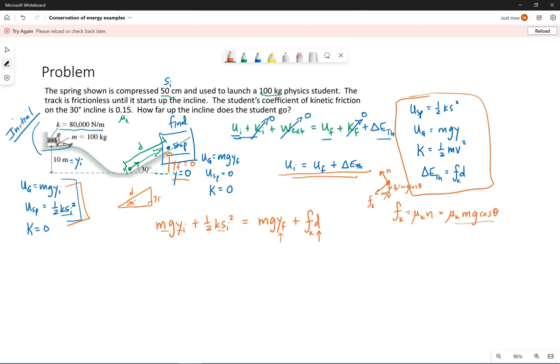If I draw just a triangle representing the distance along the incline and this y final, we have an opposite side to the 30 degrees and the hypotenuse. So the sine of this angle, 30 specifically, will be y final over d, which means y final will be d sin theta.